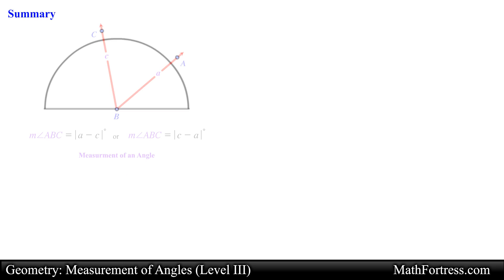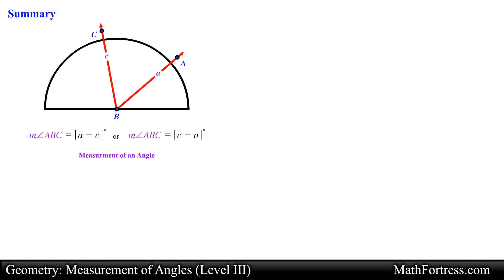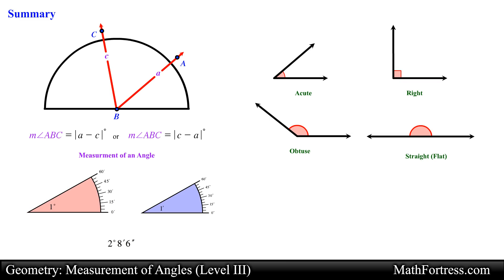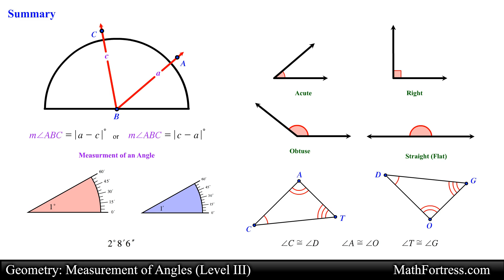These are the basics of measuring angles. We can find the measure of an angle by using a protractor — the measure is found by computing the absolute value of the difference of the degree measurements that the rays correspond with on the protractor. We can classify angles as acute, right, obtuse, or straight. When we need to measure more precisely, we use degrees, minutes, and seconds notation. We can also identify congruent angles using arc marks or the congruent symbol.